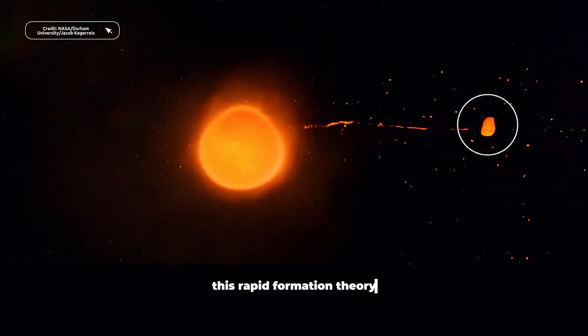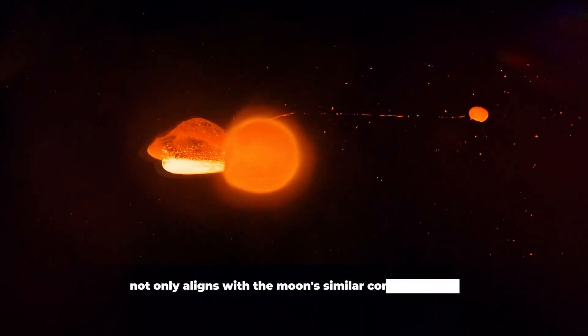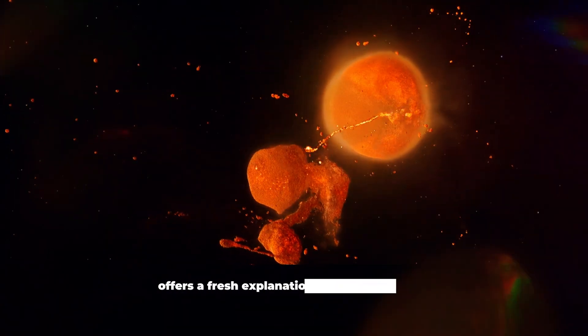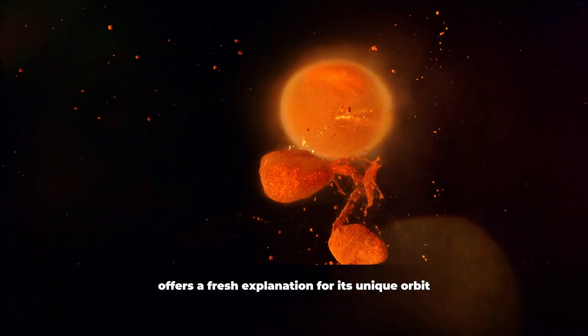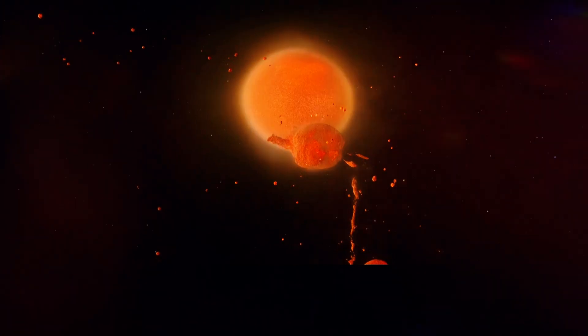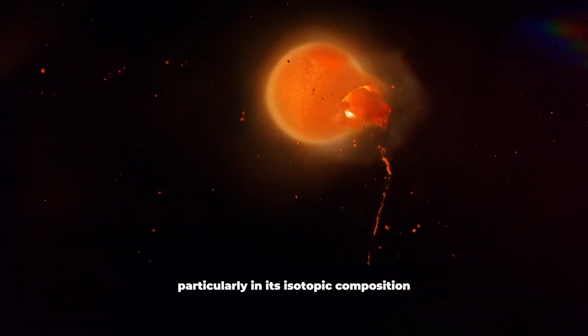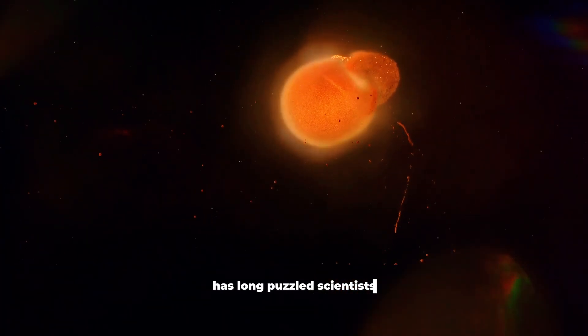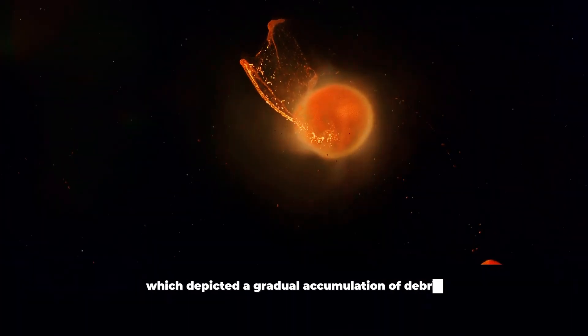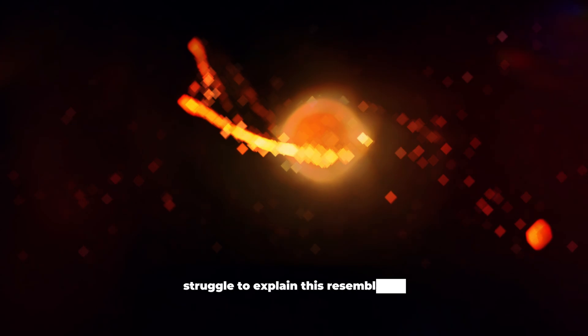This rapid formation theory not only aligns with the Moon's similar composition to Earth, but also offers a fresh explanation for its unique orbit and structure. The Moon's striking similarity to Earth, particularly in its isotopic composition, has long puzzled scientists. Previous models, which depicted a gradual accumulation of debris, struggled to explain this resemblance.